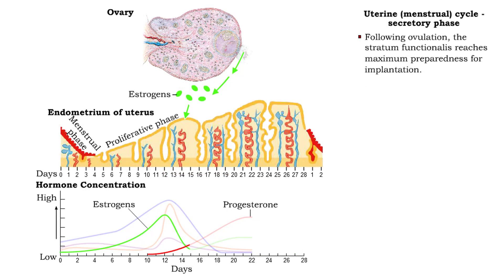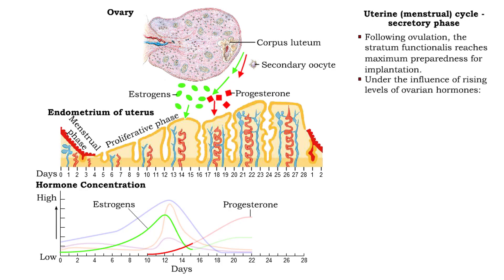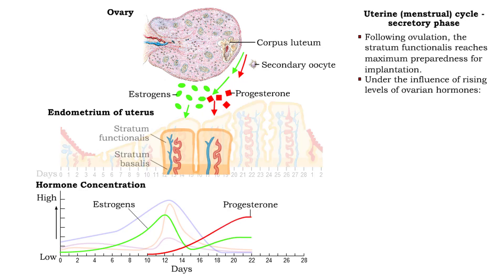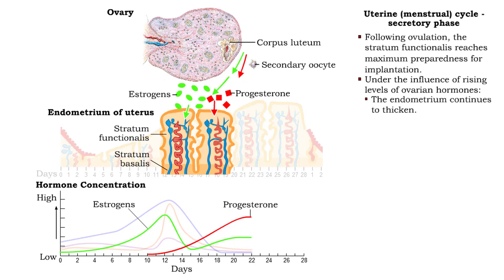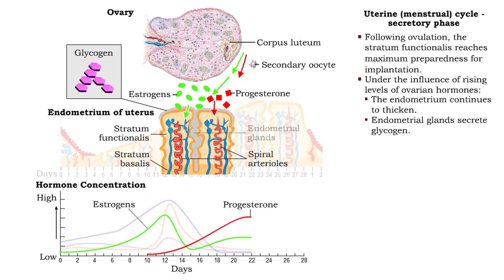After ovulation, progesterone and estrogens secreted by the corpus luteum in the ovary stimulate further development of the stratum functionalis. The endometrial glands grow and coil. The endometrium becomes even more vascular and continues to thicken slightly, and the endometrial glands begin to secrete glycogen.